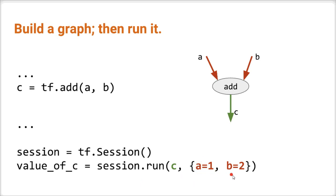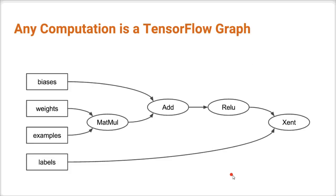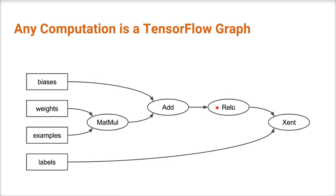Now this obviously sounds awfully complicated, but it has a number of advantages. What does it mean for a computation to be a TensorFlow graph? Here we have a moderately interesting computation: we have some weights stored in a variable, we get some examples from the outside, do a matrix multiplication, add some biases, apply a ReLU, and compute the cross-entropy using some labels. If you're familiar with this, this is just a single neural network layer — basically a primitive linear classifier.